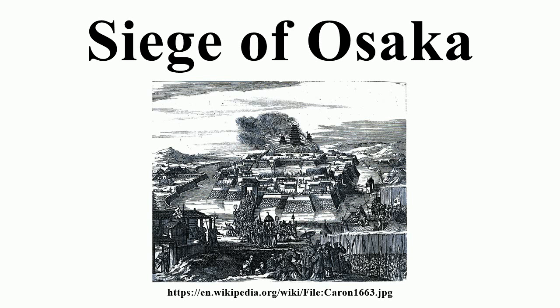Ieyasu sought to establish a powerful and stable regime under the rule of his own clan. Only the Toyotomi, led by Hideyoshi's son Toyotomi Hideyori and based at Osaka, remained an obstacle to that goal.